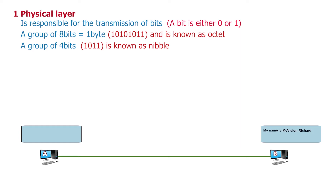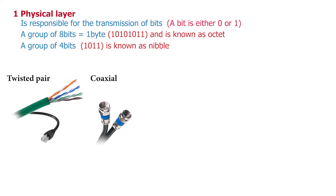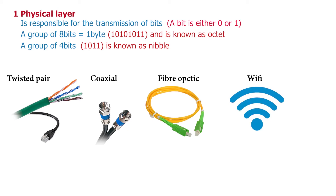We will learn more about units of digital information in later videos. The main responsibility of the physical layer is to transmit raw bit streams over a physical medium. These media include all network cable types such as twisted pair cable, coaxial cable, and fiber optic cable, and even Wi-Fi. Even though the OSI model was developed before the implementation of Wi-Fi technology, Wi-Fi is still considered a layer one technology in the OSI model because Wi-Fi exists to transmit bits just as network cables do, but through a wireless medium.